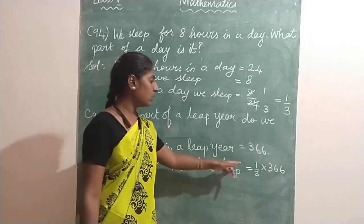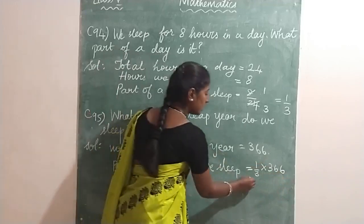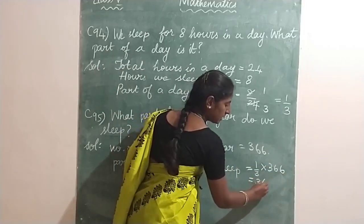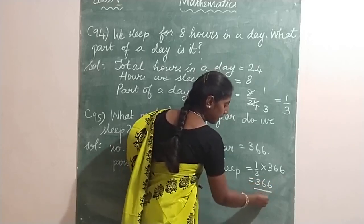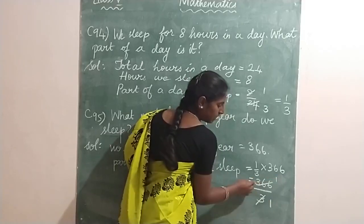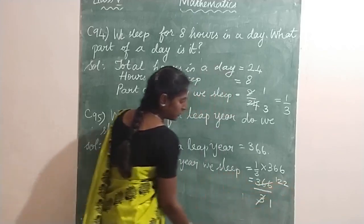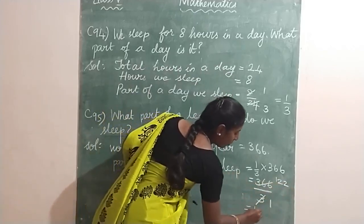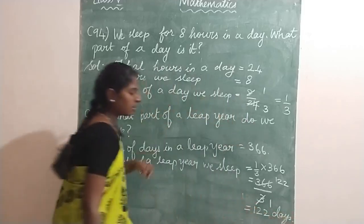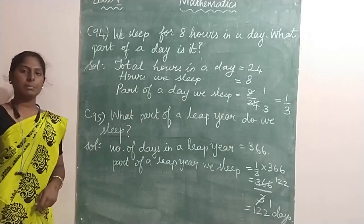That is 1 multiplied by 366, divided by 3. Cancelling 366 and 3: 3 ones are 3, 3 twos are 6 — so 366 divided by 3 gives 122. Therefore we sleep for 122 days in a leap year.